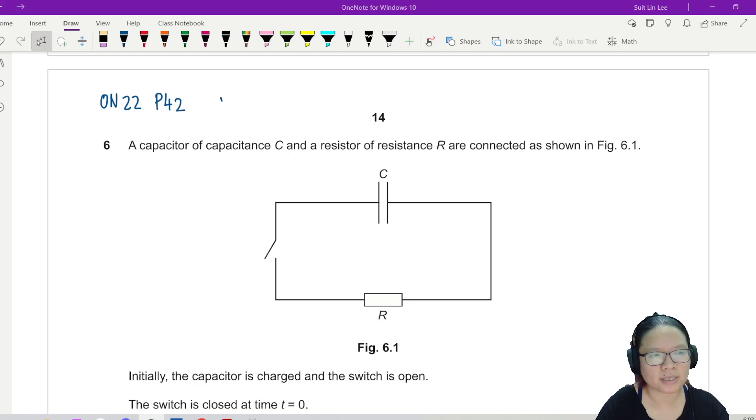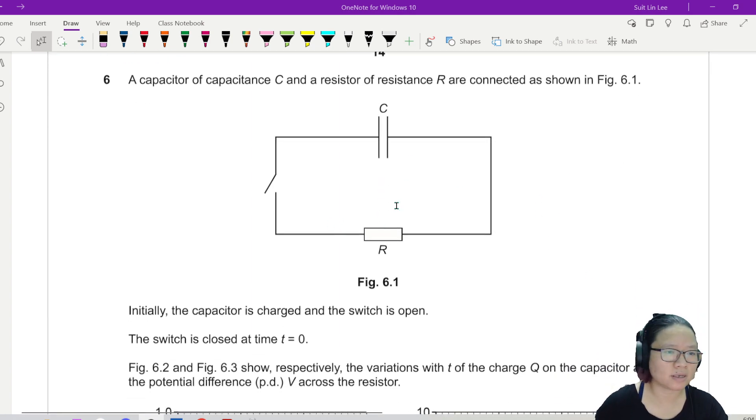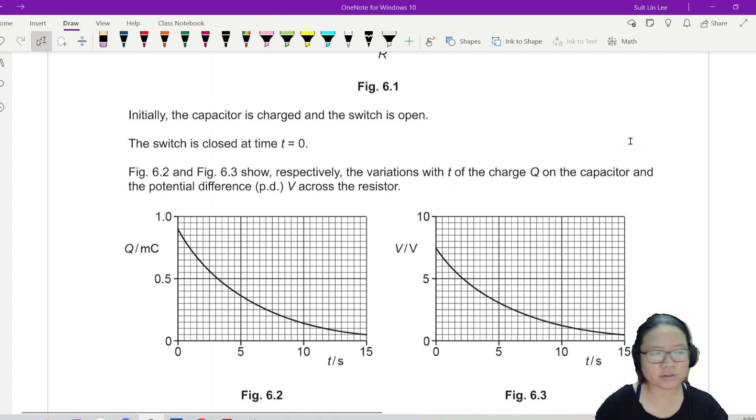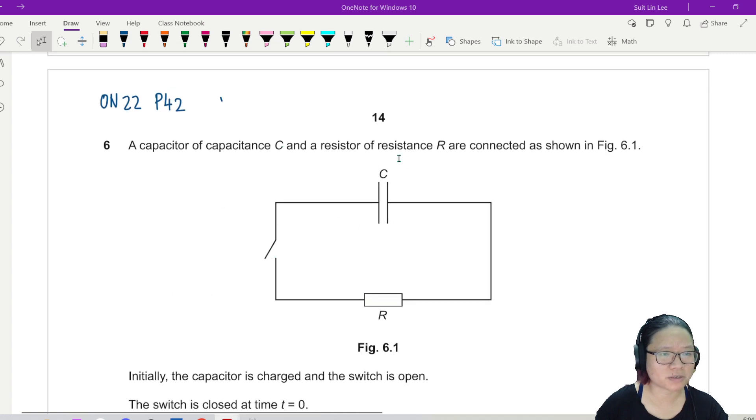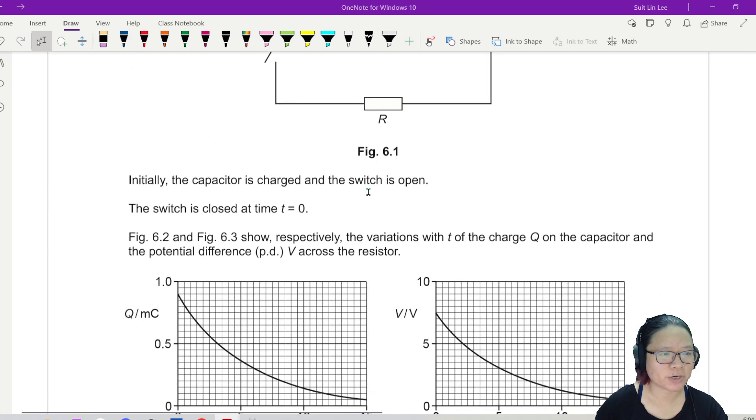Okay, so this one is another capacitor question from winter 22, and it's a pretty standard capacitor circuit. This question is very helpful - they draw the exponential graph for us, that's really helpful, although you should know how the shape of the graph looks like. It says here the switch is closed at t=0, capacitor will discharge.